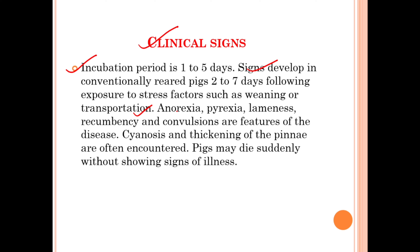In infected pigs, anorexia, pyrexia, lameness, recumbency, and convulsions are observed. Cyanosis and thickening of the pinna can also be noticed. A peculiar characteristic of Glässer's disease is that infected pigs may die suddenly without showing prominent clinical signs of illness.